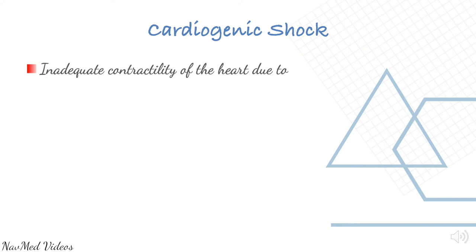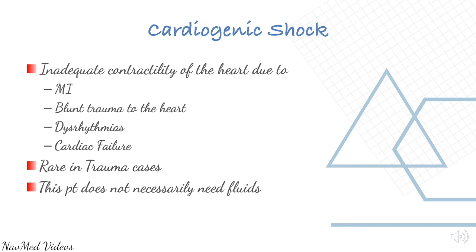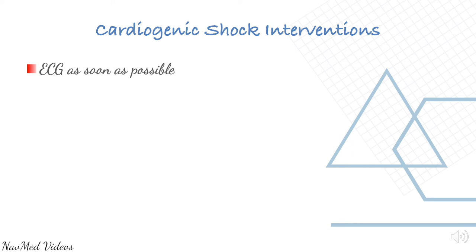Cardiogenic shock is inadequate contractility of the heart due to MI, blunt trauma, dysrhythmia, or cardiac failure. It is rare in trauma cases. The patient does not necessarily need fluids. Interventions include ECG as soon as possible, cardiac monitor, and treating the appropriate dysrhythmias.